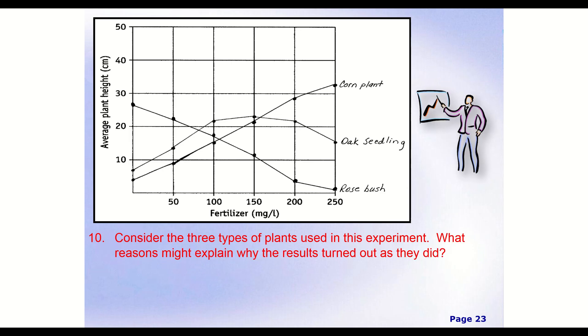All right, and moving on to question number 10. Consider the three types of plants used in this experiment. What reasons might explain why the results turned out as they did? Now, there's a lot of possible answers for this. I'll provide a couple sample ones for you in a moment, but let me explain a few things that we could look at. So there's a lot of different conclusions that we could make. We could say that this fertilizer is best for corn plants and bad for rose bushes. We can maybe look at, oh, well, maybe plants that are on a farm do better with a lot of fertilizers. Maybe those are plants that are more accustomed. They're adapted to high fertilizers because we use a lot of fertilizers on farms and agriculture, and that's the only plant that's really there. That's a possibility.